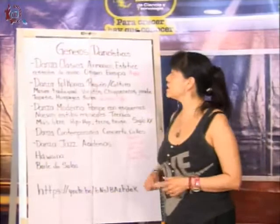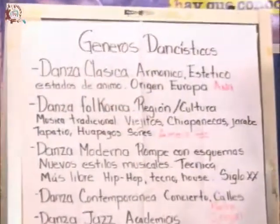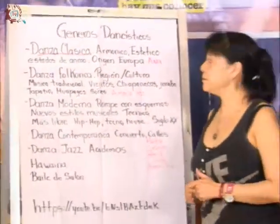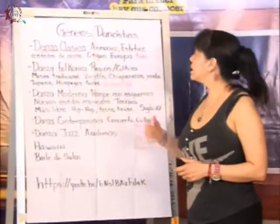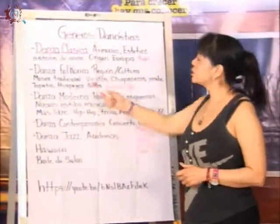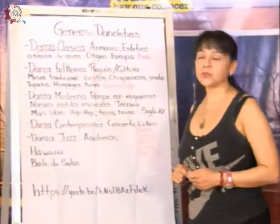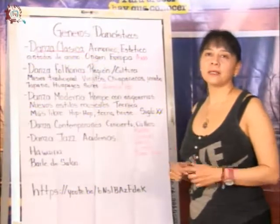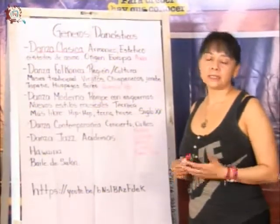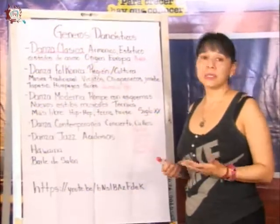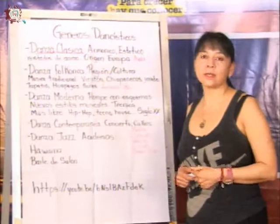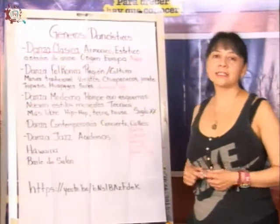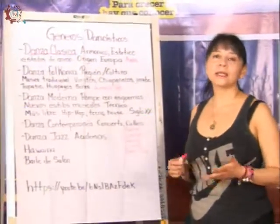Empezamos entonces: existe la danza clásica. Esta danza clásica surge en Europa, tiene ahí su origen. Son movimientos completamente armónicos, estéticos y nos representan estados de ánimo. En este tipo de danza es de un corte muy estético y únicamente se daba a géneros muy altos culturales. Así inició. Posteriormente, ahora puede ser de alcance hacia todo, a toda la región, y culturalmente nos demuestran ciertas técnicas ya establecidas, una técnica que ya está establecida.